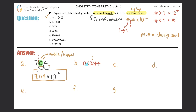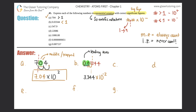Letter B: 0.03344. The decimal is here, but we need to move it after the first non-zero, which is between the two threes. That's two bunny hops, so times 10 to the second. The original number was less than one, so it's a negative two. The zeros at the front are called leading zeros, and leading zeros never count — no exceptions. So we don't include them, and the final answer is 3.344 times 10 to the negative two.